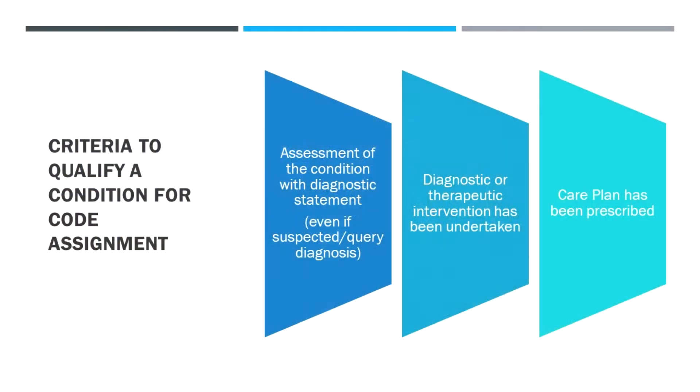To qualify a condition for a code, there needs to be a particular diagnostic statement, some kind of diagnostic workup — whether clinical or through investigations — to confirm that diagnosis, and then some kind of care plan associated with it.